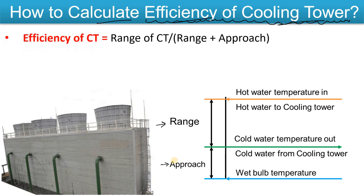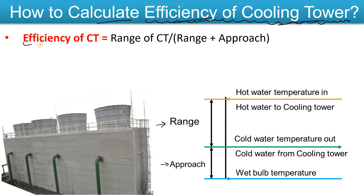The efficiency of the cooling tower depends on the range and approach. Simply, the efficiency of the cooling tower is the range of the cooling tower divided by range plus approach. There is nothing like rocket science when we calculate the efficiency of the cooling tower — it is only range divided by range plus approach.